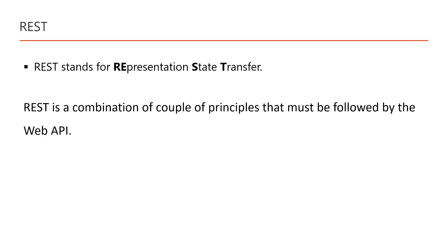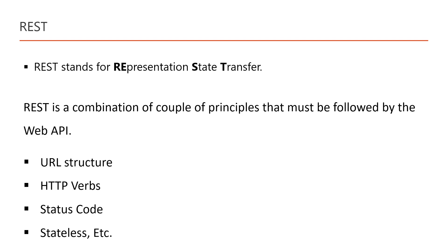We can create a web API using any technology — for example, Node.js, Java, or .NET — and we can follow the REST principles in all these technologies. So these are common standard guidelines that need to be followed by your web API project. The first principle is URL structure: the URL of your application must follow the REST principles, including HTTP verbs, status codes, stateless design, and more.